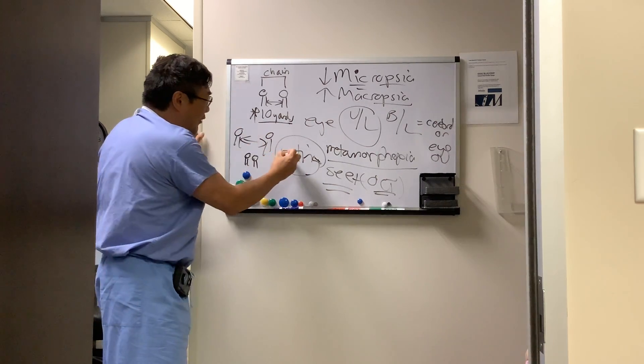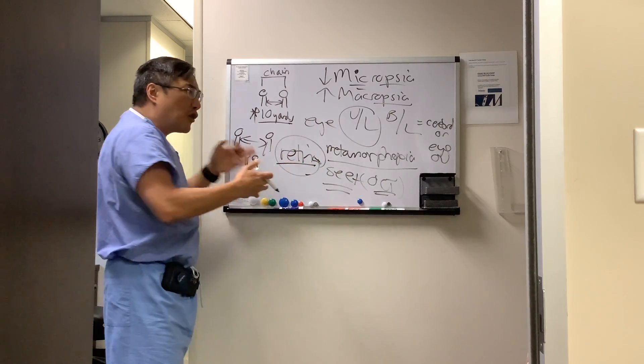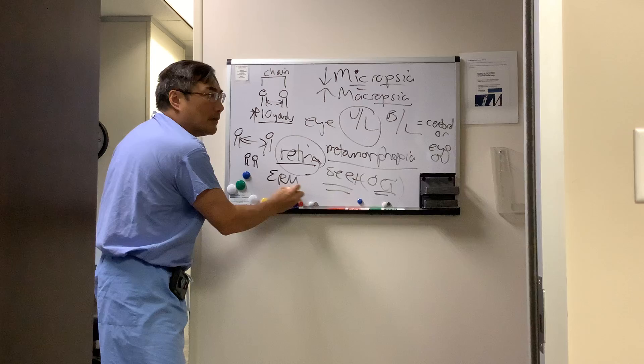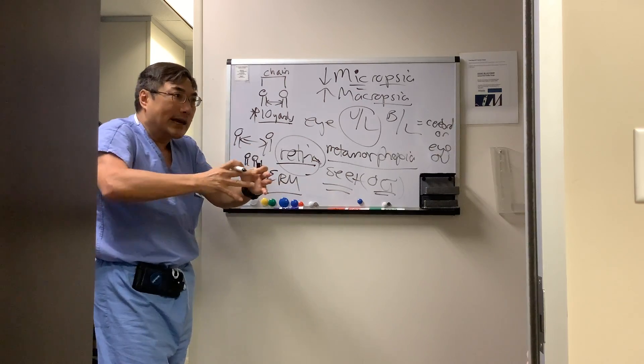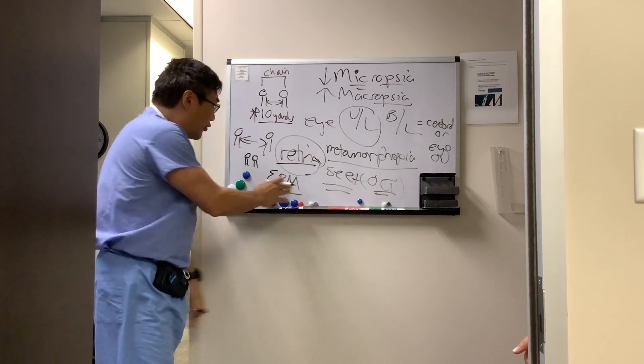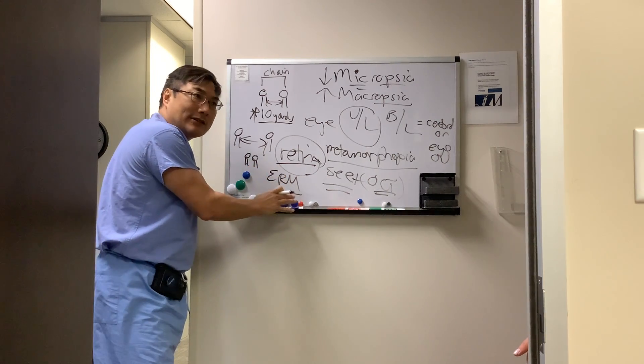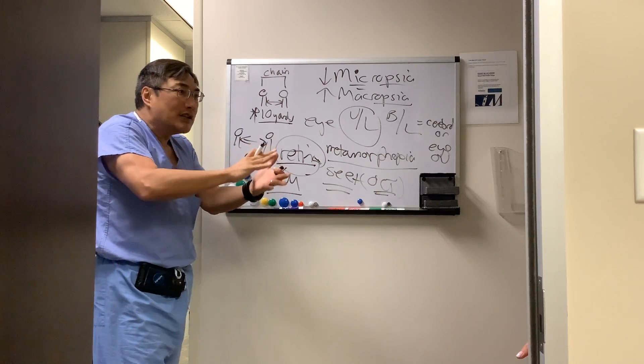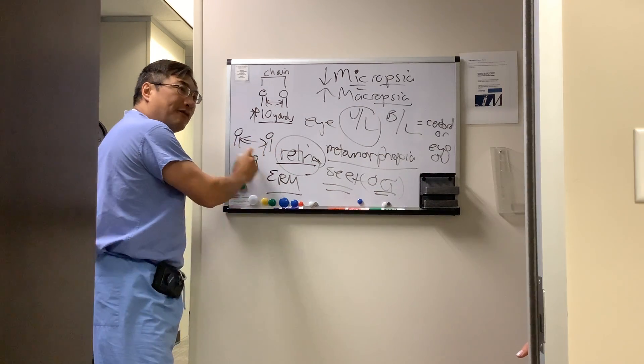And so you might be asking yourself right now, what would make the retinal photoreceptors get closer and farther? And the most common cause is epiretinal membrane. So there's a membrane there that's pulling them apart, or it's a contracting membrane that's pulling them together, or there's fluid in your macula—macular edema—or there's a subretinal neovascular membrane there, or there's something in your retina that is altering the photoreceptors.